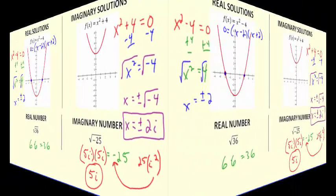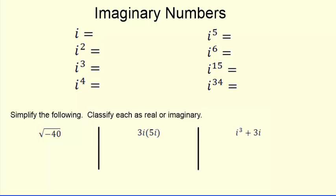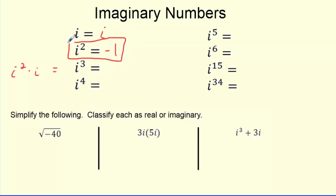So let's play around with powers of imaginary numbers. i is i — that's the imaginary number. i squared is the most important thing by far — you've got to know it. Circle it, star it, draw a box around it. i times i is i squared, which equals negative 1. That is the key to this whole thing.